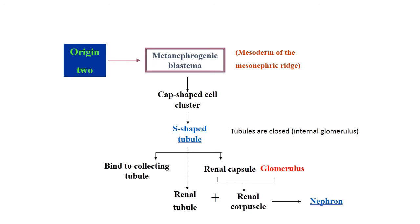The second origin is the metanephrogenic blastema. It appears as cap-shaped cells which develop into the S-shaped tubule. From the S-shaped tubule appear the collecting tubules, renal tubule, and renal capsule. The renal capsule with glomeruli — the blood vessels that grow inside — forms the renal corpuscle. The renal corpuscle and renal tubules together form the nephron.